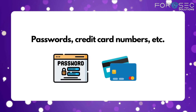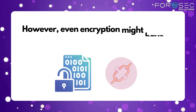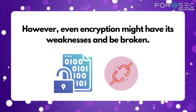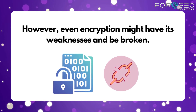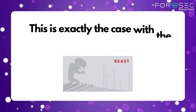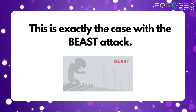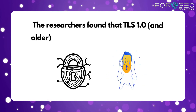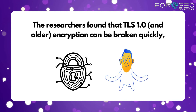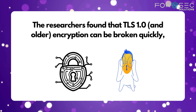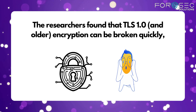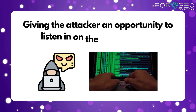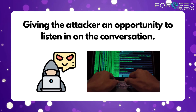If there is no encryption, the attacker has access to all the information exchanged between the web browser and the web server, such as passwords, credit card numbers, etc. However, even encryption might have its weaknesses and be broken. This is exactly the case with the Beast Attack — researchers found that TLS 1.0 and older encryption can be broken quickly, giving the attacker the opportunity to listen in on the conversation.